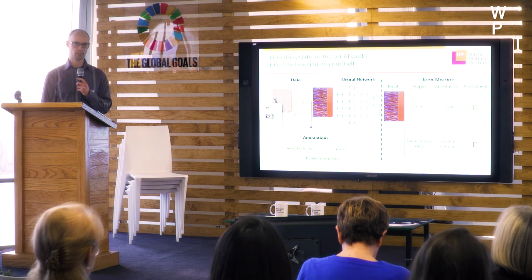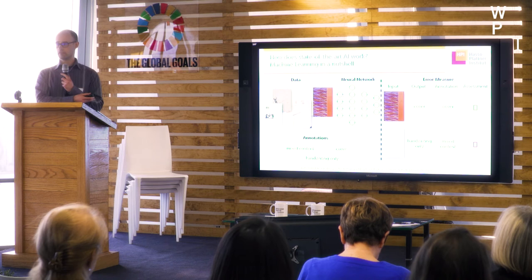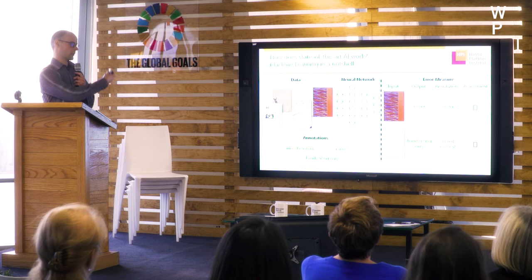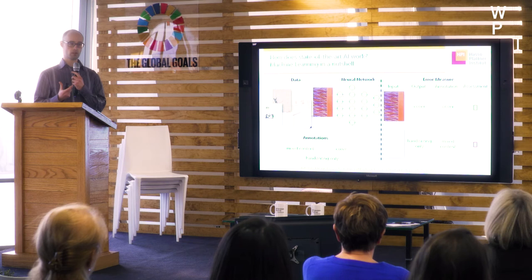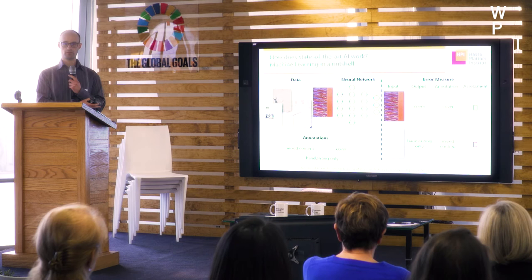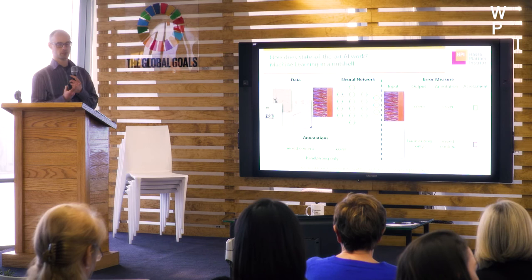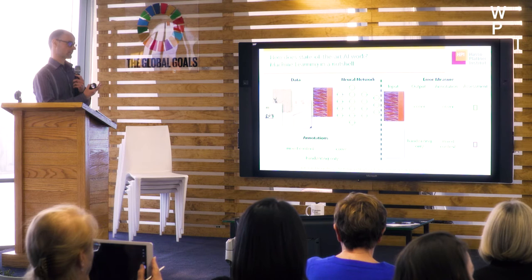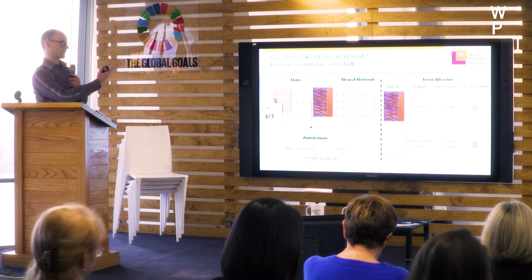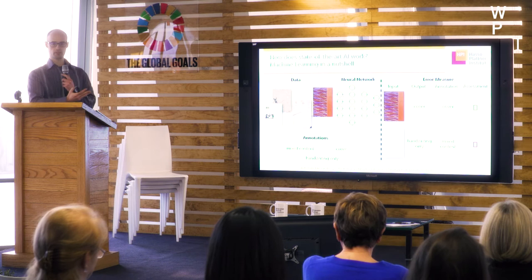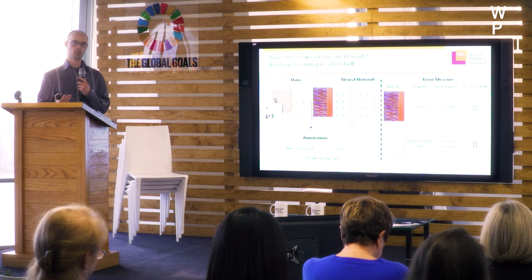Let me give a brief overview of how state-of-the-art machine learning works. There are three ingredients: first, data — those are our images; second, a neural network, which is our algorithm that makes decisions and predictions; and third, annotations — for each image during the training phase we need to know what's in there. We also need an error measure to know whether a prediction is correct or not.